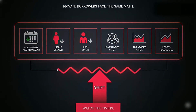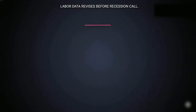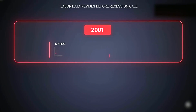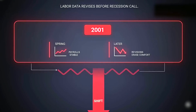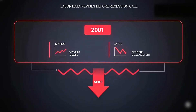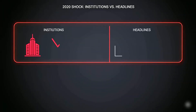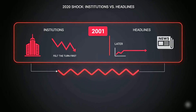Watch the timing. In prior cycles, the labour data revised before the recession call. In 2001, payrolls looked stable in spring; revisions later erased the comfort. In 2020, the shock was faster, but the pattern still held. Institutions felt the turn first, headlines later. The signal appeared early.